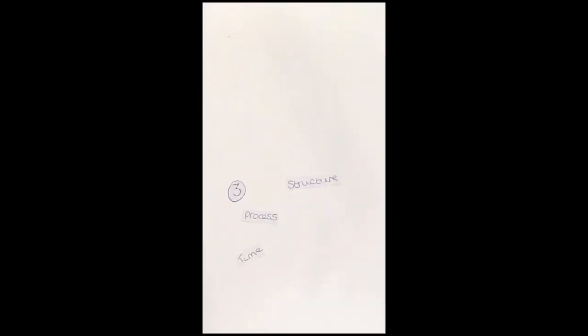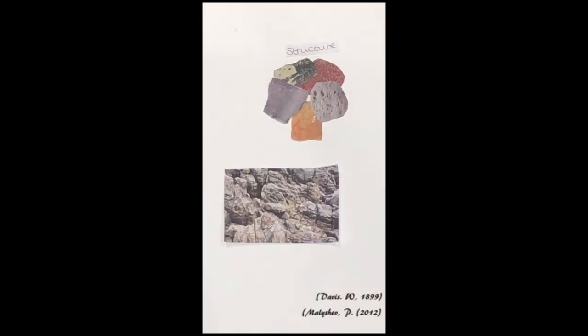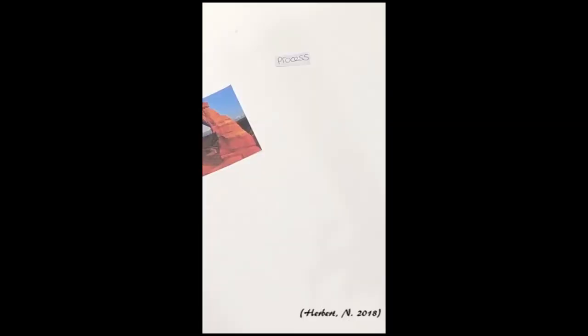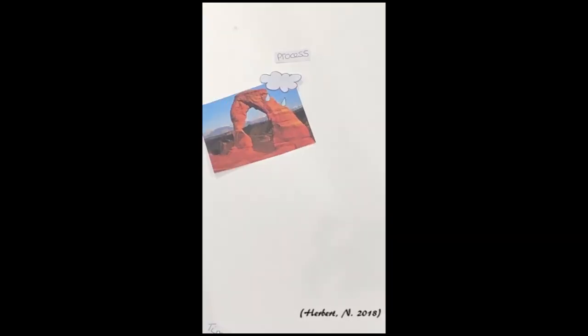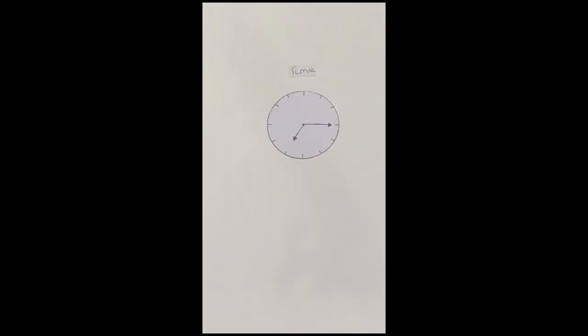The cycle is dependent on three factors. Structure, which includes rock type and structural characteristics. Process, which includes agents of denudation such as weathering and erosion — these processes cannot complete work instantly and are therefore a function of time. Time — the amount of change caused by destructive processes increases with the passage of time.